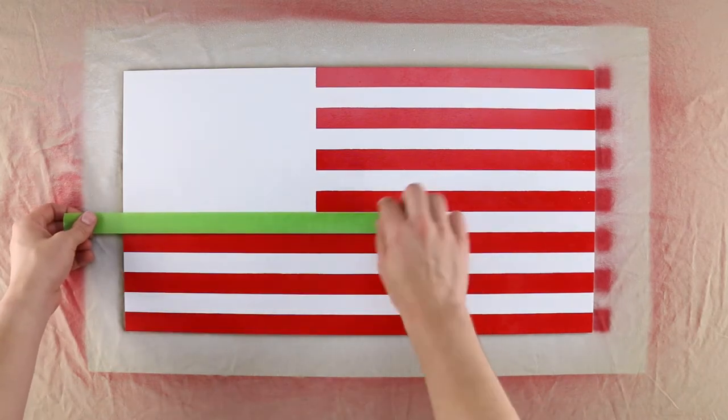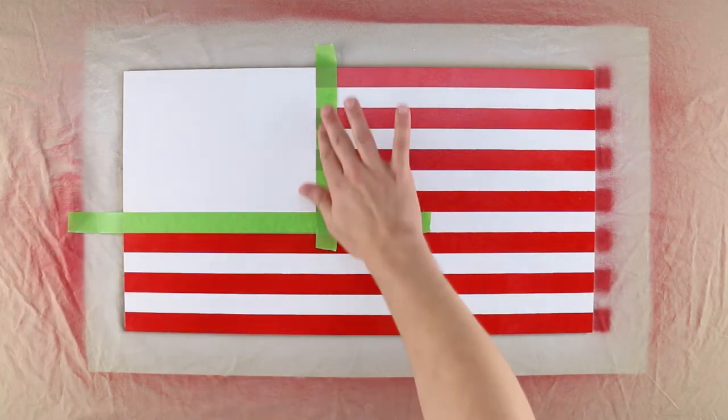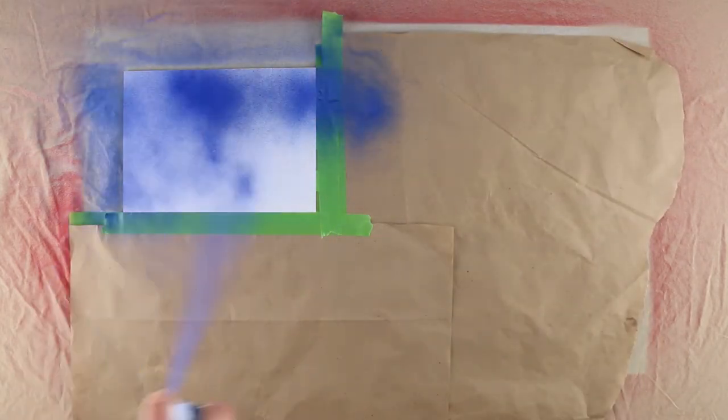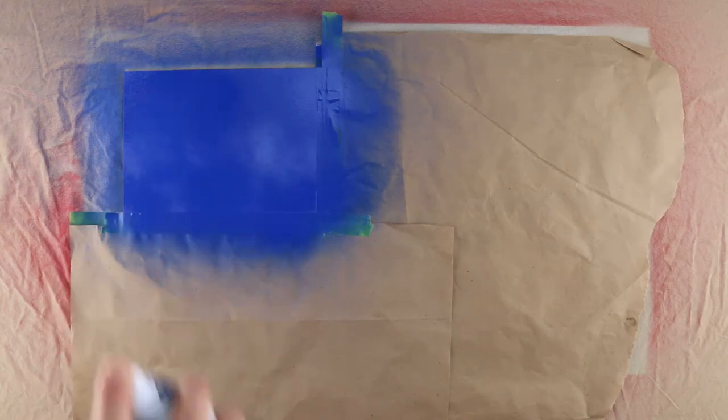Now mask off the square in the top left with Frog Tape Painter's Tape and Craft Paper. Completely spray paint the masked off square blue in 1-2 coats.